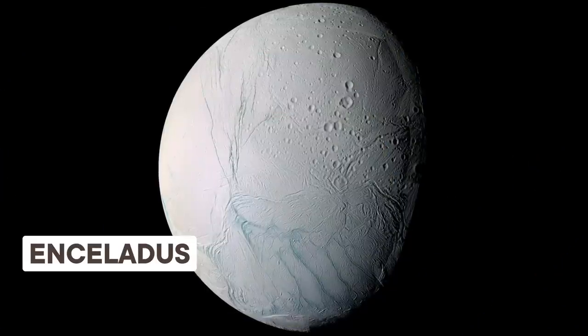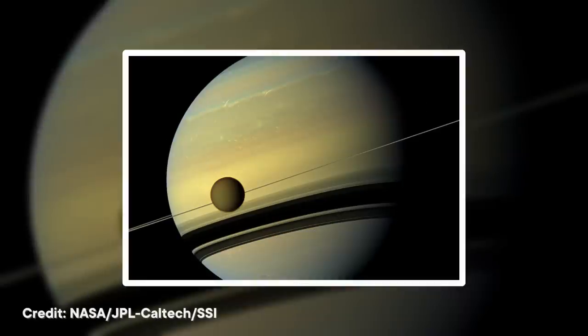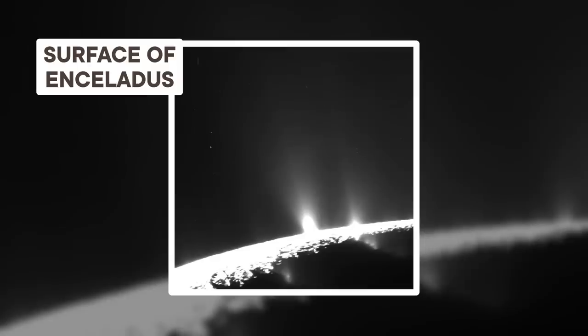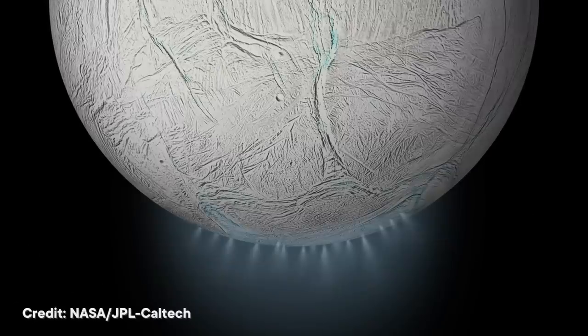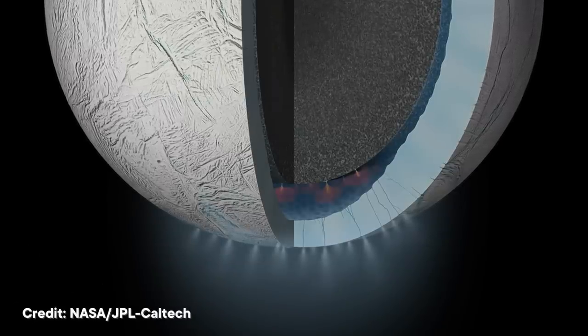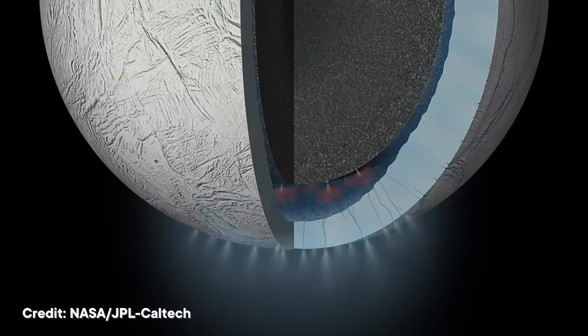Saturn's moon Enceladus might be right on the money as far as nailing this balance. Saturn is well outside our Sun's Goldilocks zone, which only includes Earth and Mars, and the surface of Enceladus is covered in ice. However, in 2005, the Cassini spacecraft spotted strange geysers of liquid shooting up from its surface. This points to the possibility of an underground liquid water ocean on the moon, which could be a prime environment for finding microbial life.